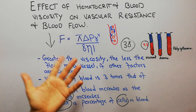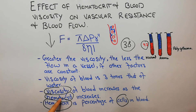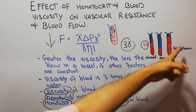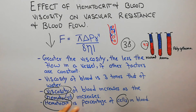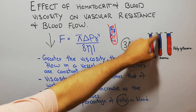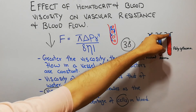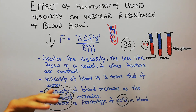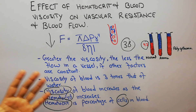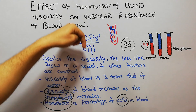The viscosity of blood is three times that of water, and it increases as hematocrit increases — which is due to the percentage of cells in the blood. Any factor such as anemia, polycythemia, or environmental factors that increase or decrease the percentage of cells will affect viscosity. It's about the percentage of cells, not just the number — so if fluid increases or decreases, the percentage changes too. When viscosity increases, blood flow decreases, and when viscosity decreases, blood flow increases.